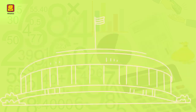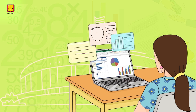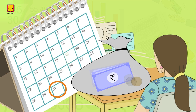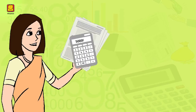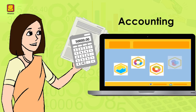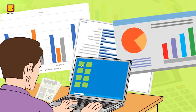As per government rules, proper maintenance of books of account is necessary for businesses. Various reports related to these have to be prepared and taxes must be paid regularly. Accounting includes records of all such financial transactions.